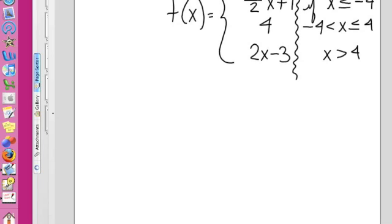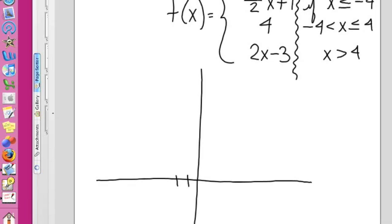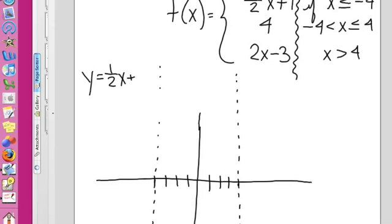My walls are at negative four and positive four. This line goes here. This line goes here. And this line goes here.